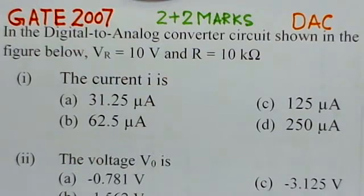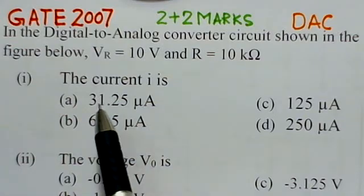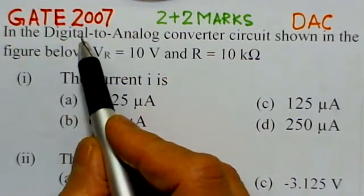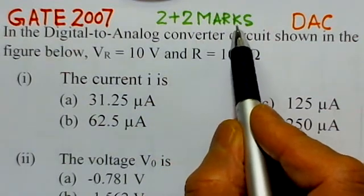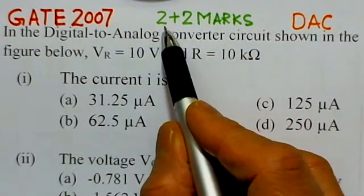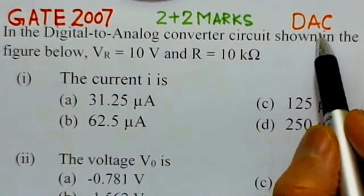This video solution covers the second problem on ADC and DAC. It is a linked answer type problem from GATE 2007, worth 2 plus 2 marks, with two parts of 2 marks each. The problem is on digital-to-analog converters.